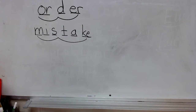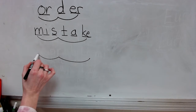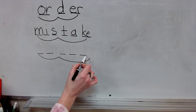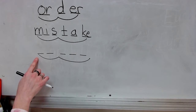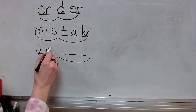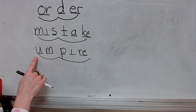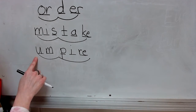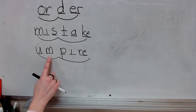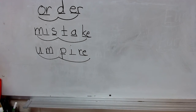The next word is umpire. What word? Syllables: um-pire. Stretch: umpire. Write the spelling for umpire. Check it and correct it. What word? Spell umpire. Yes — umpire.